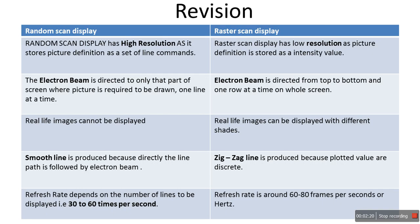Now a revision of all points side by side. Random scan display has high resolution; raster scan display has low resolution. This is because in random scan display you store the picture definition as a set of line commands, while in raster scan display you store it as intensity values. The electron beam in random scan display is directed only to the part of the screen where the picture is required.